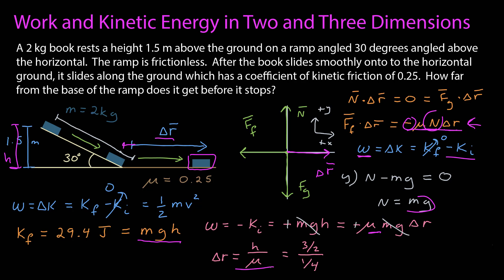H is 3 halves, 1.5 meters. The coefficient of friction is 0.25, which is 1 quarter. And so I just get easy integer arithmetic. 3 halves times 4 over 1. The 4 and 2 cancel. 3 times 2 and the result is 6 meters.